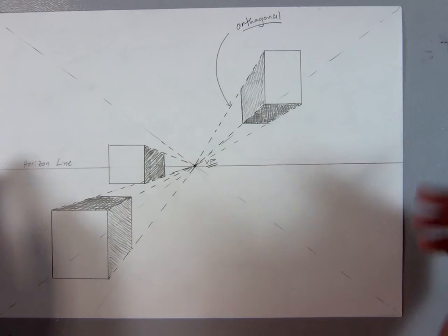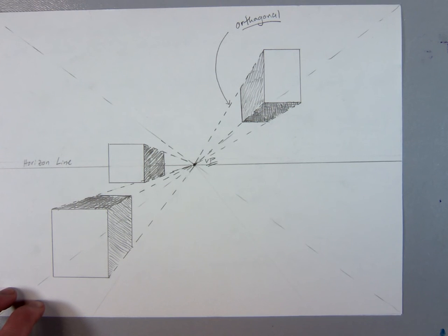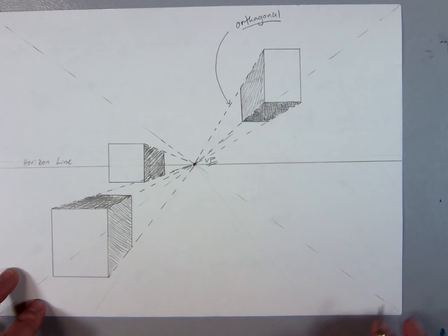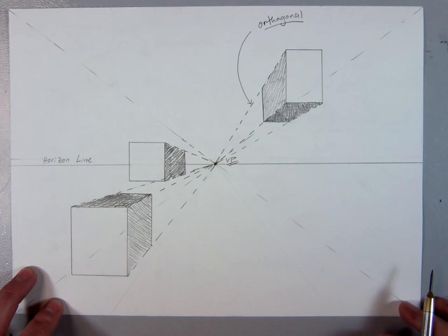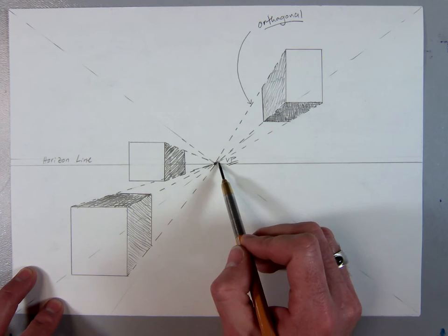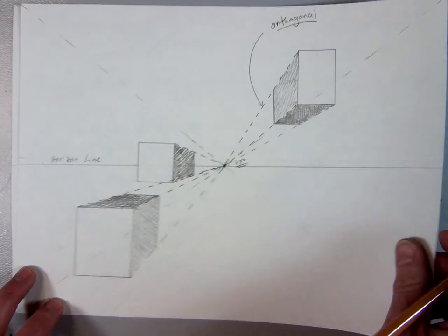The first part of this lesson is going to be finding the true center of your paper. There's many ways to find the center of a rectangle or square, but I'm going to show you one that you're going to use again and again in our lessons on perspective. Then we'll put in the horizon line, the vanishing point, and I'll show you how to make three different boxes.